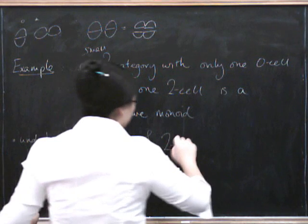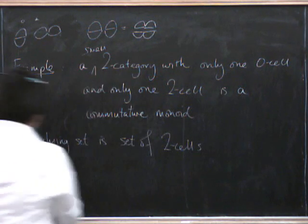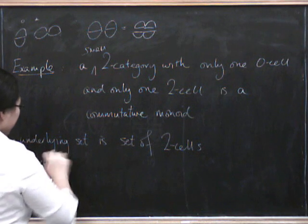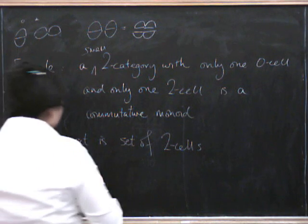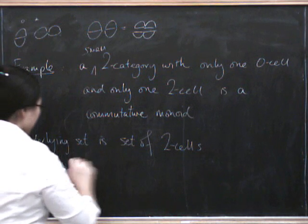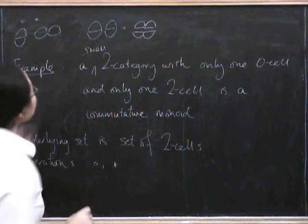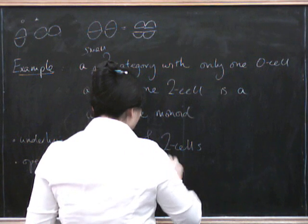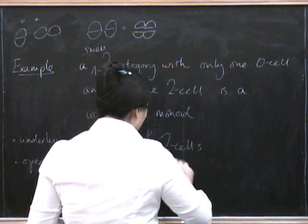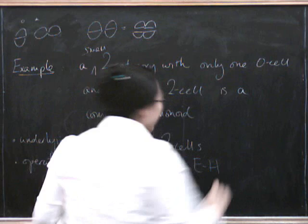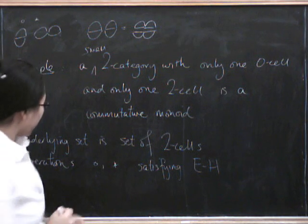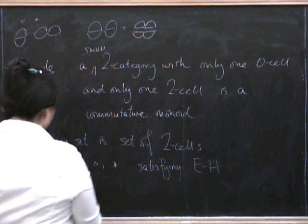The underlying set is the set of 2-cells, and the operation - we can take it to be circle or star. We have circle and star, but they satisfy the Eckman-Hilton argument, so they're the same and commutative.